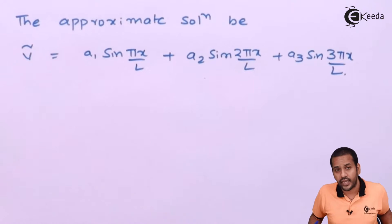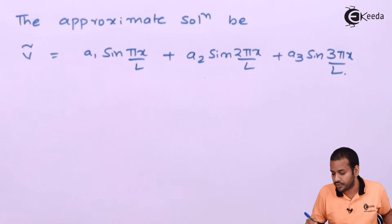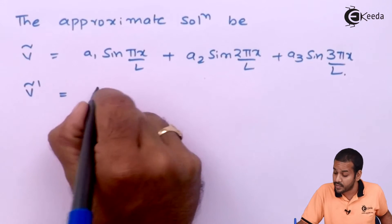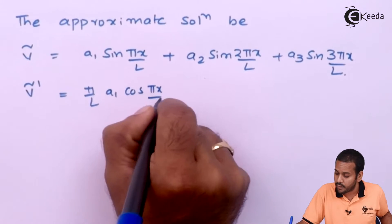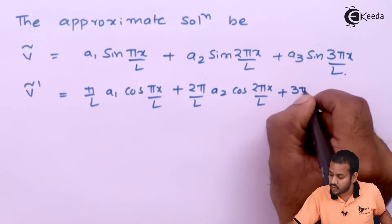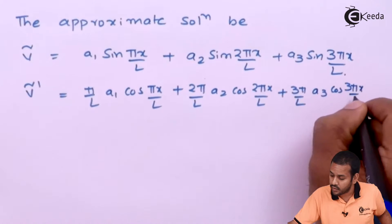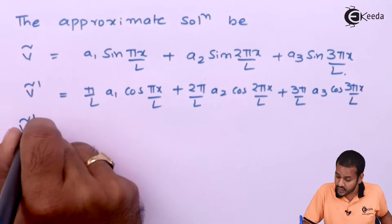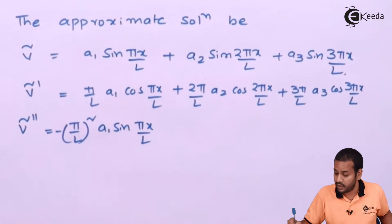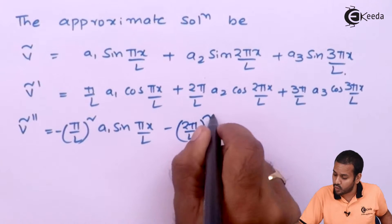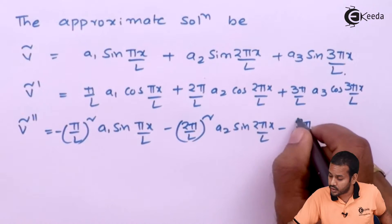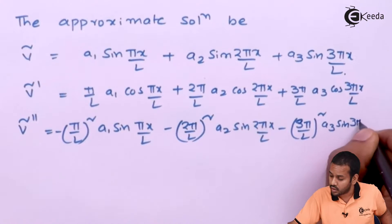We have to calculate the error by substituting the trial solution in our governing equation, which has four derivatives. The first derivative Ṽ' = (π/L)A₁cos(πx/L) + (2π/L)A₂cos(2πx/L) + (3π/L)A₃cos(3πx/L). The second derivative Ṽ'' = −(π/L)²A₁sin(πx/L) − (2π/L)²A₂sin(2πx/L) − (3π/L)²A₃sin(3πx/L).